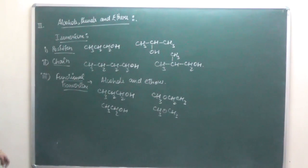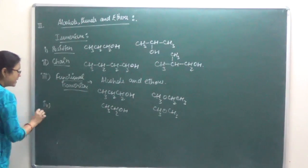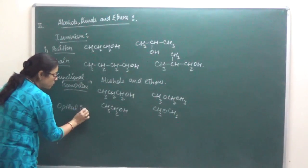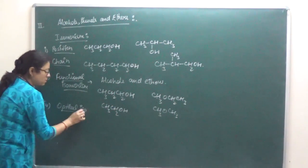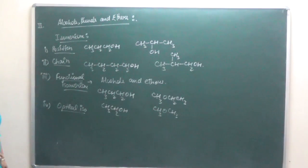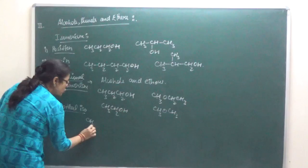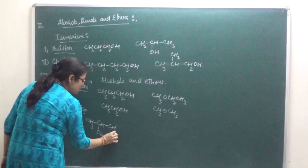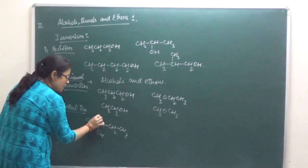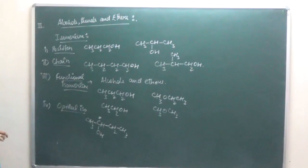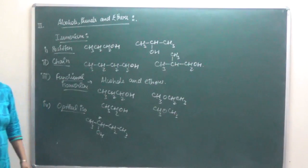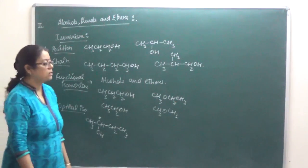Then certain alcohols which have a chiral carbon atom will also show optical isomerism. For that, a chiral carbon atom must be present. For example, CH3-CH(OH)-CH2-CH3. This is the chiral carbon atom. Butan-2-ol shows optical isomerism. So today we will stop here. Tomorrow we will go on to the methods of preparation.